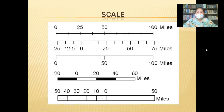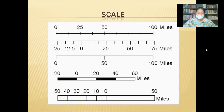This is called a linear scale. For example, 5 centimeters equals 500 kilometers, and 50 kilometers is equal to half a centimeter. This is called a linear scale.